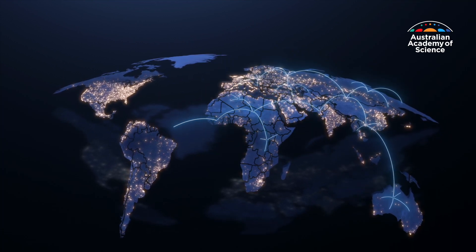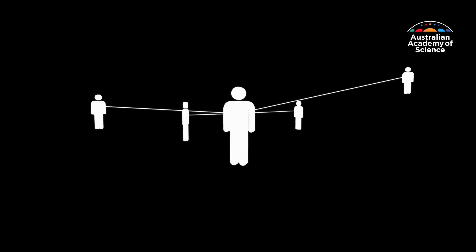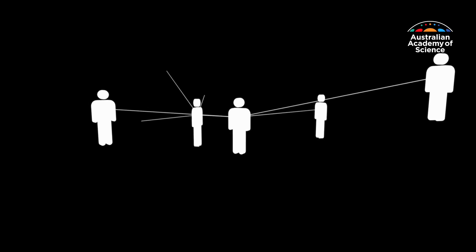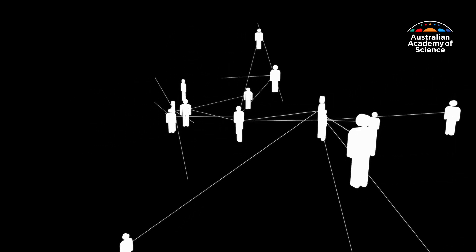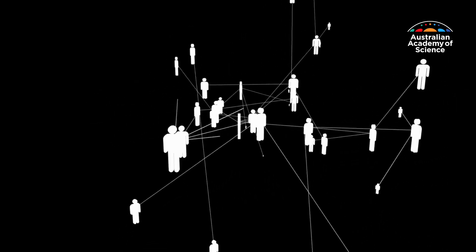With a lot of simplification, of course, you can abstract this representation into a graph — a mathematical object. You've got people as nodes and their relationships, whether they are friends or not, as edges.